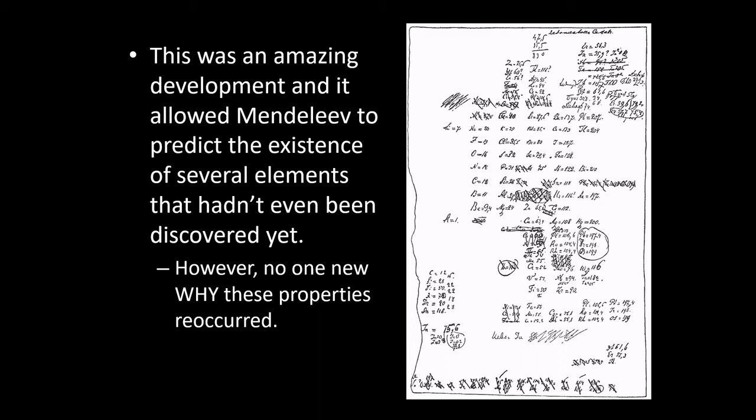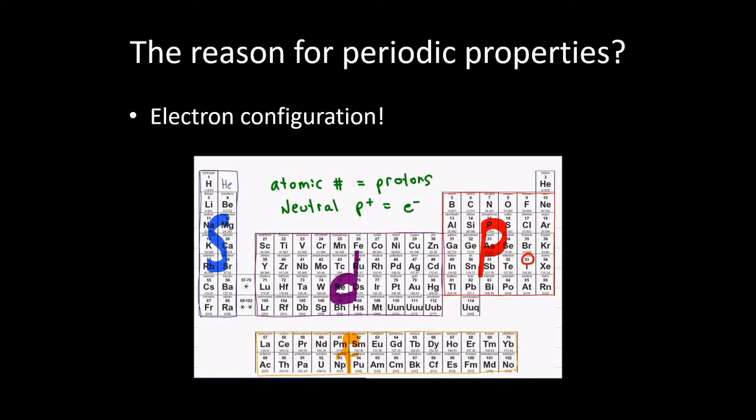The idea that there were elements with similar properties was not really discovered by Mendeleev. He was just really the first one to put it together — that you could arrange the elements such that those with similar properties were next to each other, and that would actually give you a way of even predicting the existence of elements that were unknown at that point.